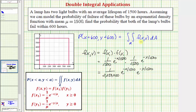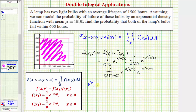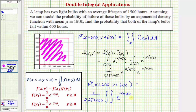This is f(x, y), and because we're looking for where x is less than 600 and y is less than 600, the region R is the square region in the xy-plane. The probability equals the double integral of f(x, y), written as 1/2,250,000 times the double integral of e^(−x/1500) times e^(−y/1500). Because the region is square, the order of integration doesn't matter, so we integrate dx dy from 0 to 600 for both x and y.